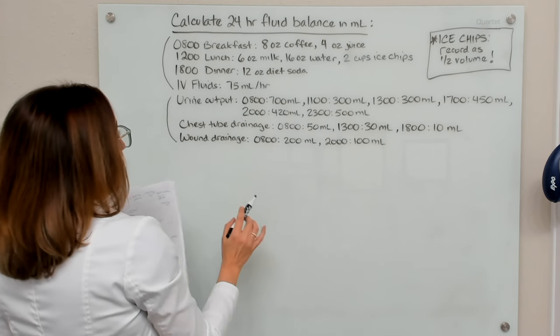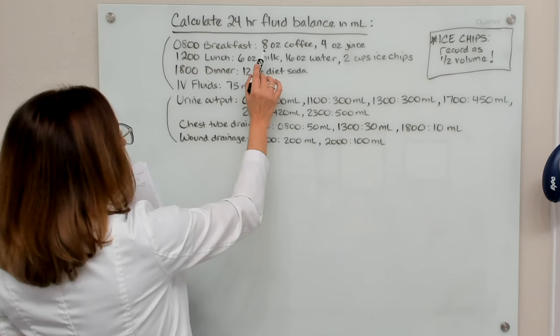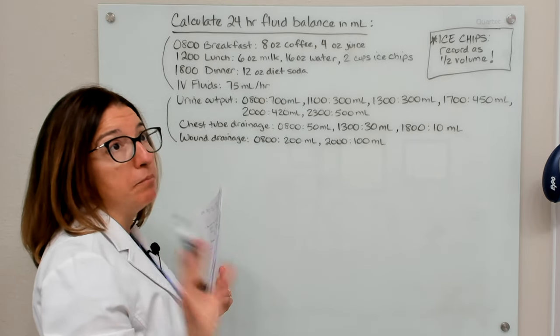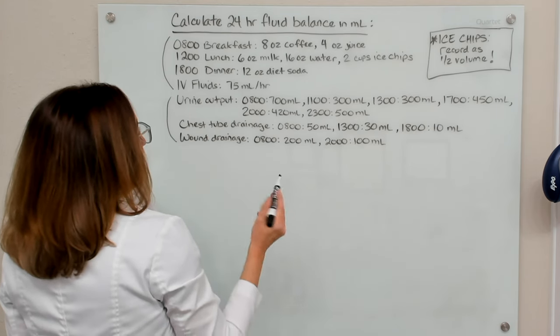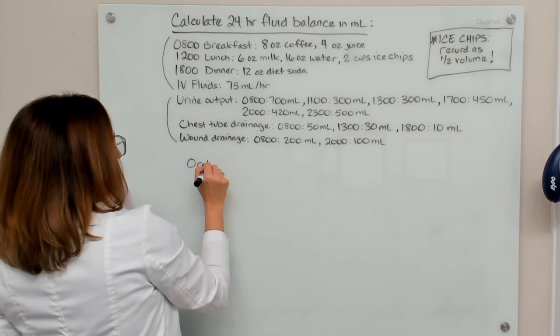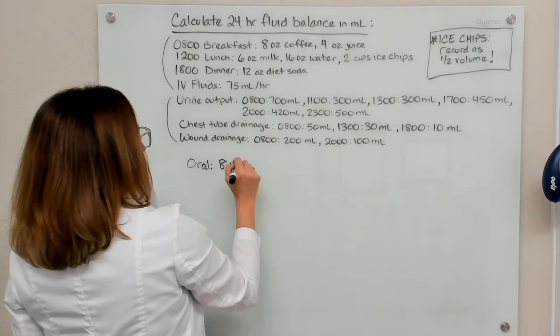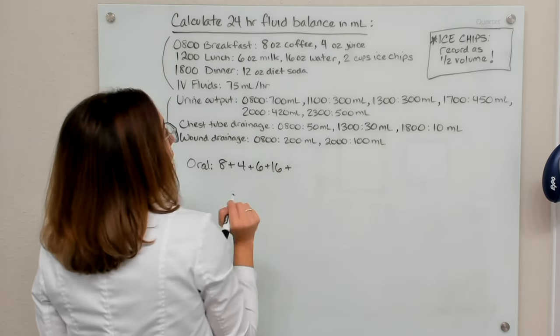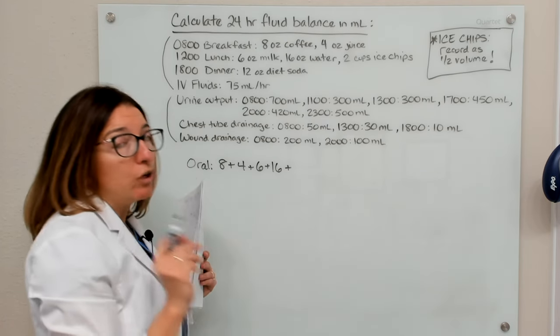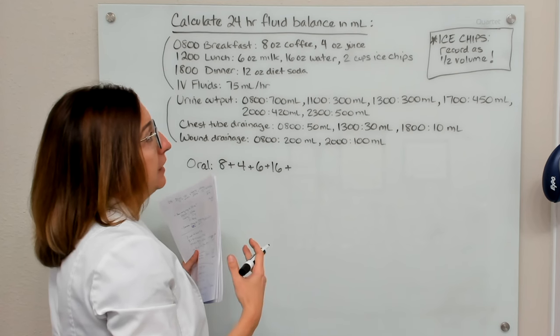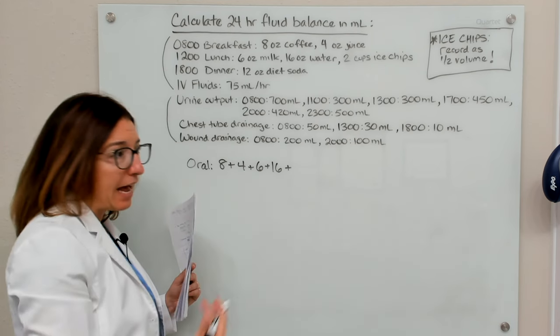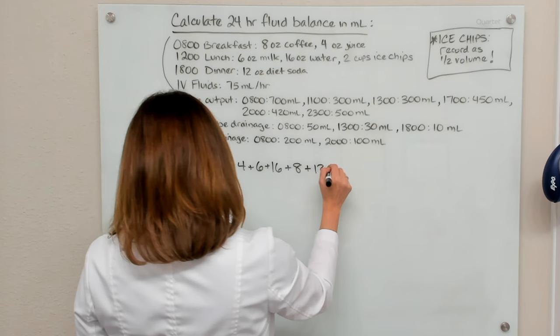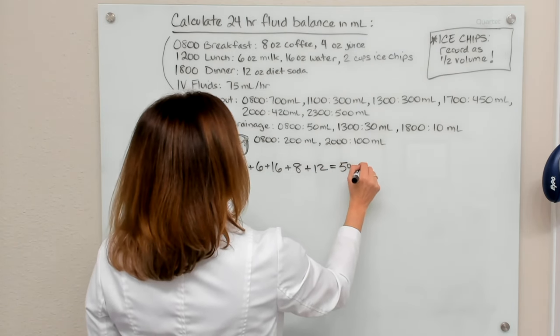So let's go ahead and add up their oral intake in ounces. And then we're going to convert that to milliliters. So for the oral intake, we're just going to add eight ounces plus four ounces of juice, plus six ounces of milk, plus 16 ounces of water. And here we have two cups of ice chips. So two cups is normally 16 ounces, but we're going to record it as half volume. So this will be eight ounces. And then we're going to add in that 12 ounces of diet soda. So if you add all that together, we end up with 54 ounces.